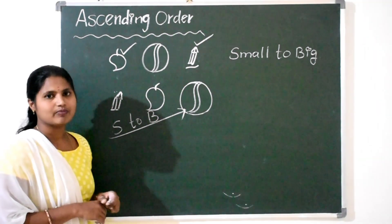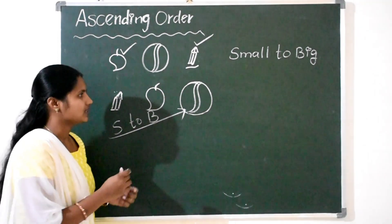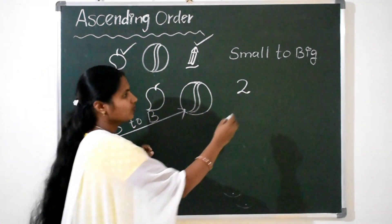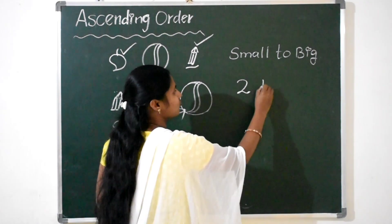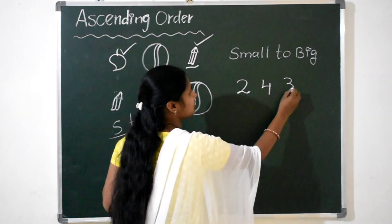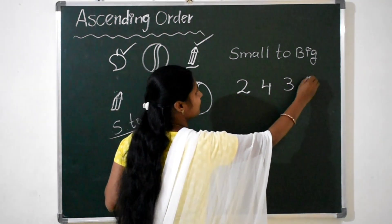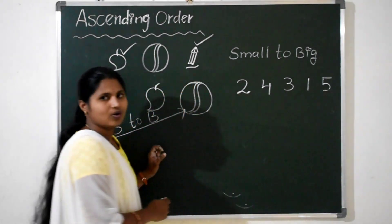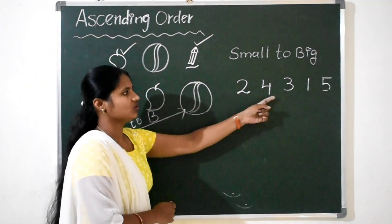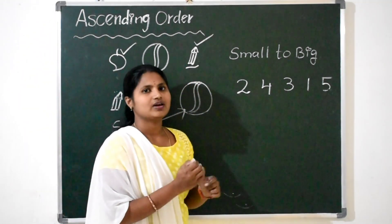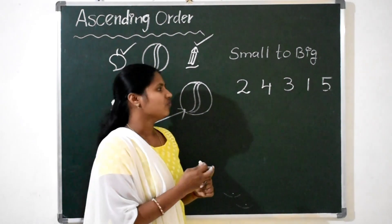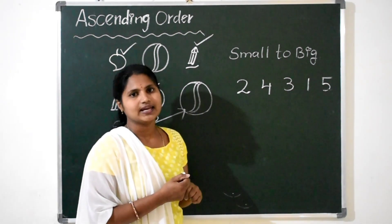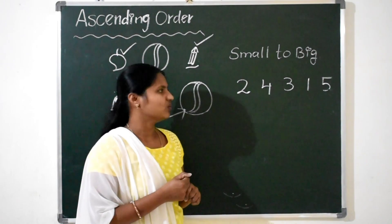Let us take numbers to understand in a better way. I am taking numbers 2, 4, 3, 1, and 5. Now we have to arrange these numbers in ascending order.